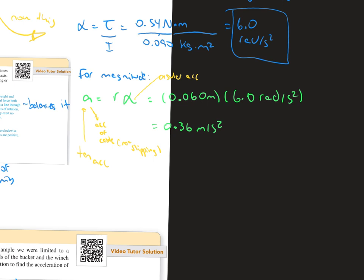And that should give us 0.36 meters per second squared as a final answer.